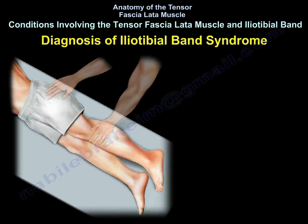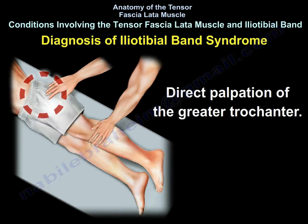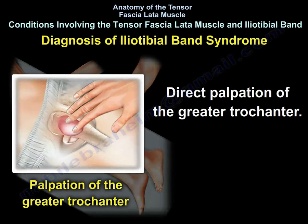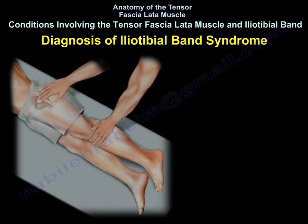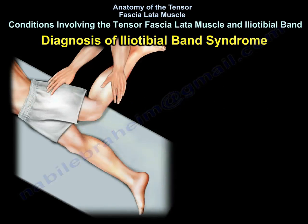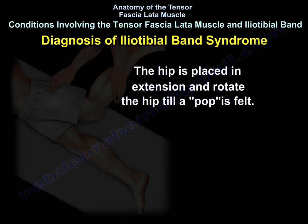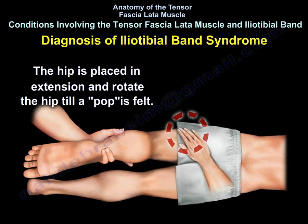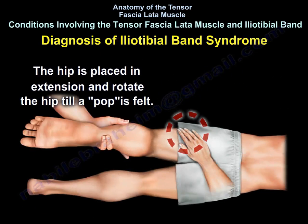How do you diagnose iliotibial band syndrome? Direct palpation of the greater trochanter. Put the patient on their side. The hip is placed in extension and the hip is rotated until a pop is felt.